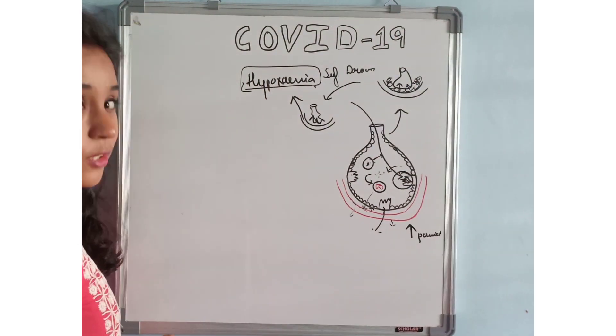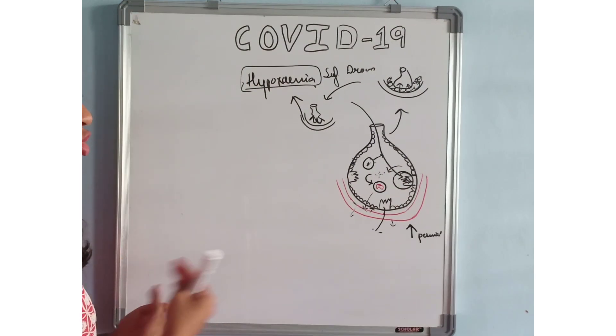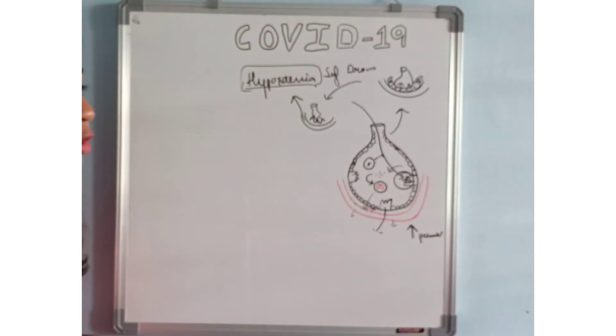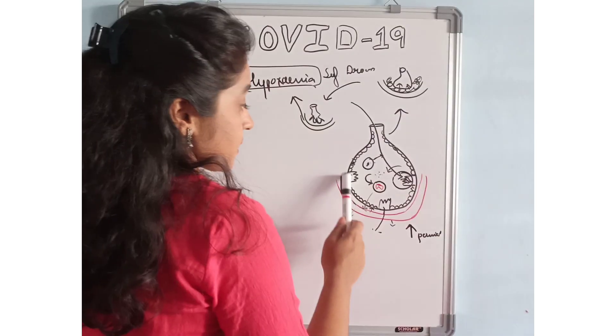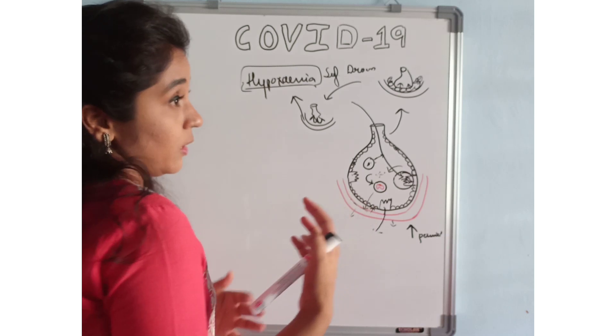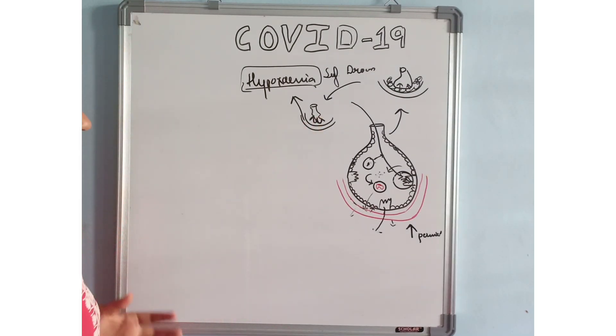If they destroy the type 1 pneumocytes, which help in exchange of gases, that is not going to happen, and that will again lead to difficulty in breathing. If they destroy the type 2 pneumocytes, there will be less surfactant, increase in surface tension, and collapse of the alveoli.